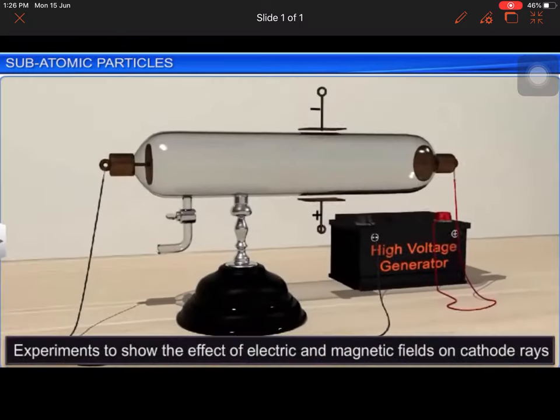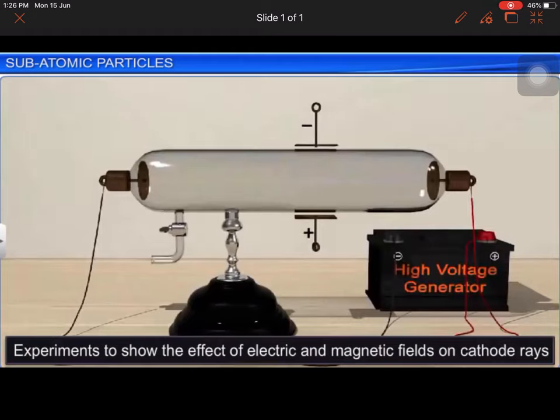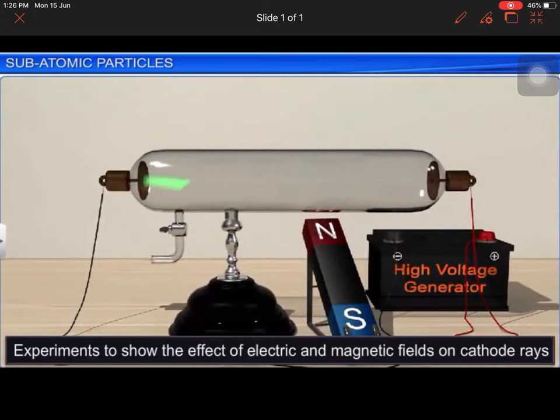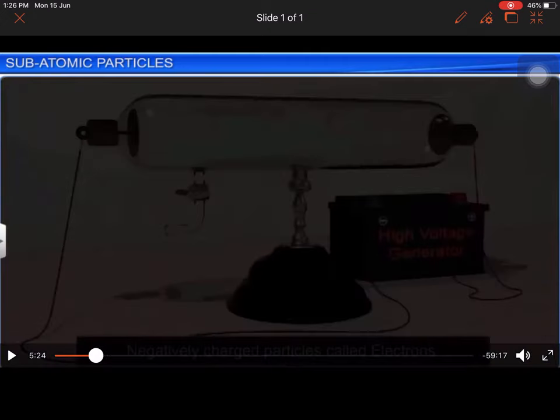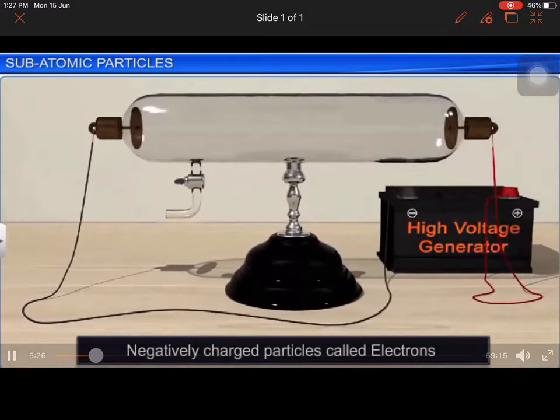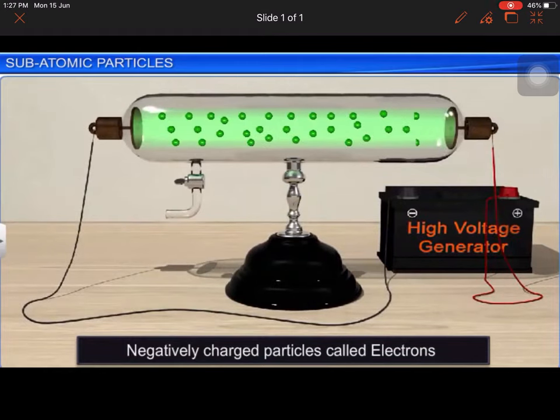However, when he applied an electric field to the setup, the cathode rays deflected towards the positive plate of the electric field. He observed the same result on applying a magnetic field. Magnetic field or electric field, the cathode ray is diverged. He concluded that the cathode rays consisted of negatively charged particles, which he named electrons.